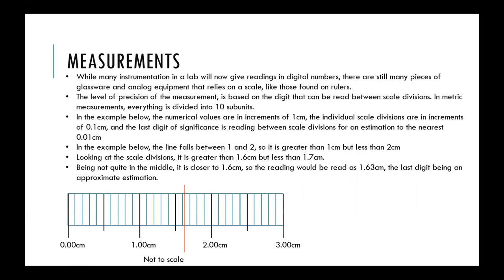The last digit in a measurement using a scale is an estimation. You can read between the scale divisions to give an educated guess as to what the exact measurement is — you can only really estimate to the nearest tenth. It would be very difficult to say this is 1.6288754 centimeters; that's impossible for a human just by looking at scale divisions. My estimation for where this line is drawn is at the 1.63 centimeter mark, but the last digit could be 1.62 or 1.64.